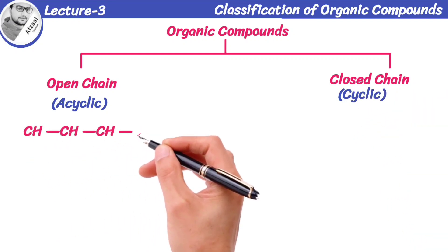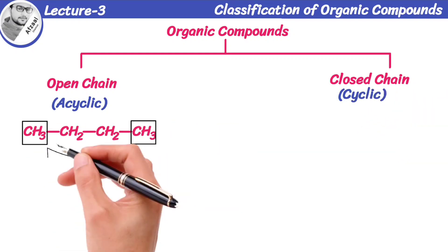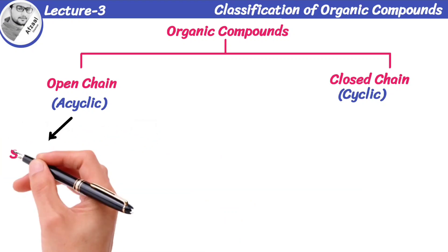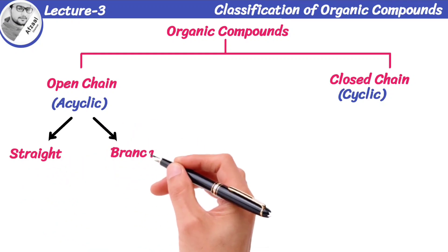Open-chain compounds are those in which the terminal carbon atoms are not joined with each other. In this way, they form a long chain of carbon atoms. These chains may be either straight or branched.